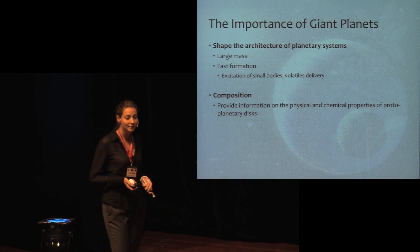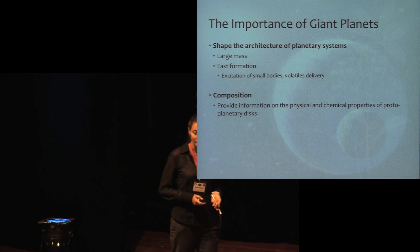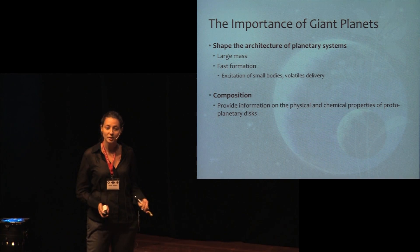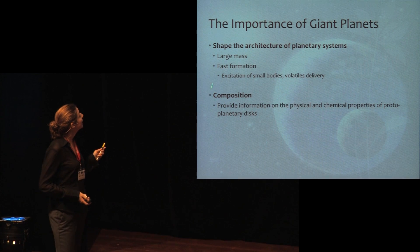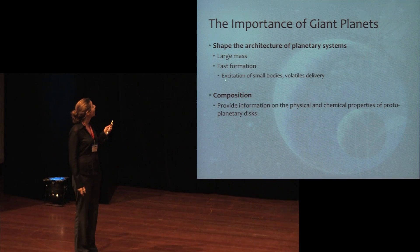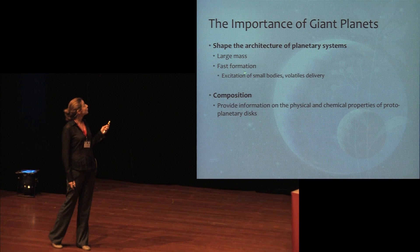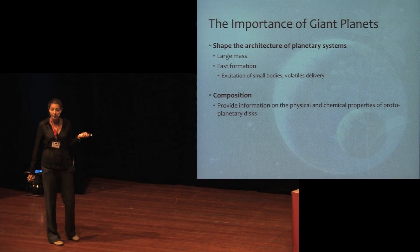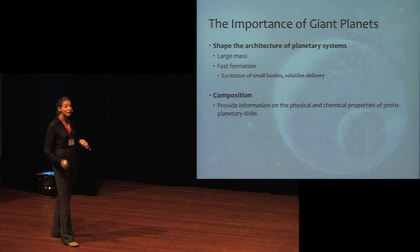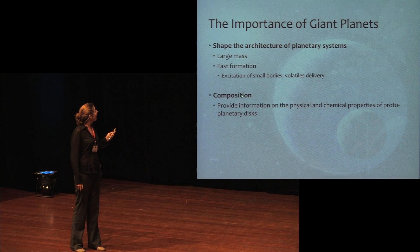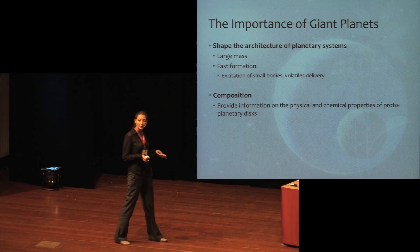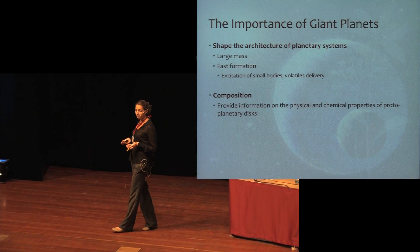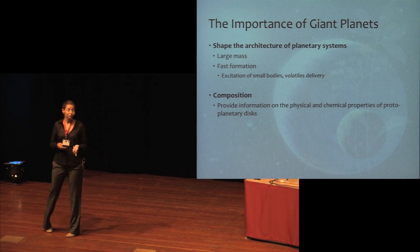Giant planets are extremely important for different reasons. First of all, they really shape young planetary systems — we learned that yesterday. They form very fast, have large masses, and are responsible for the excitation of small bodies and delivery of volatile materials toward the inner solar system. Their composition, since they have gas, gives us constraints on the composition of protoplanetary disks.